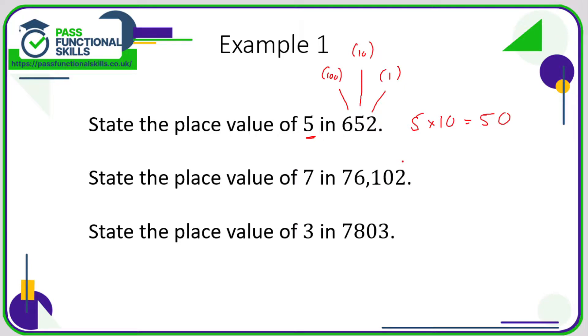The value of the 7 in this number: well, the 2 is in the ones, the 0 is in the tens, this 1 is in the hundreds, this 6 is in the thousands, so the 7 is in the ten thousands. So the value of the 7 is 7 times 10,000, which is 70,000.